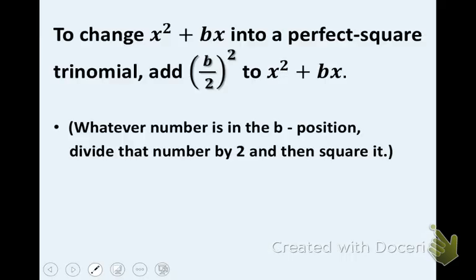To change x squared plus bx into a perfect square trinomial, what we need to do is add b over 2 squared to the quadratic. So the thing you want to do is look at whatever number is in the b spot. That number you're going to immediately divide by 2 and then square it.